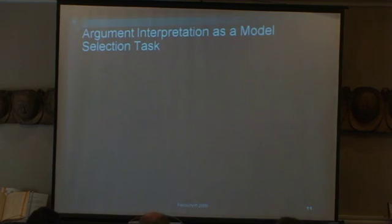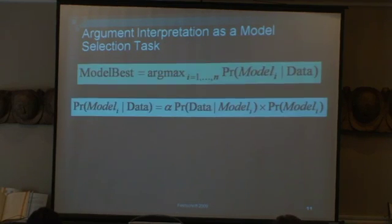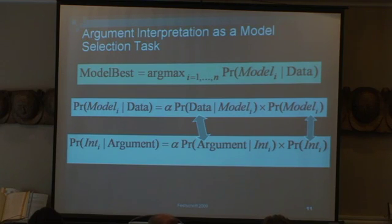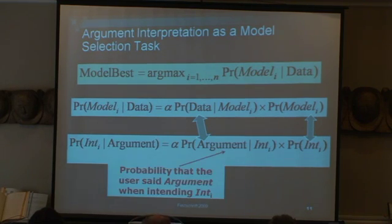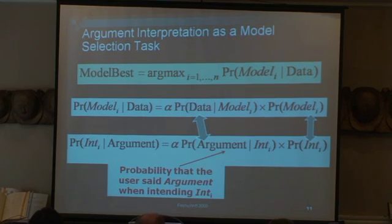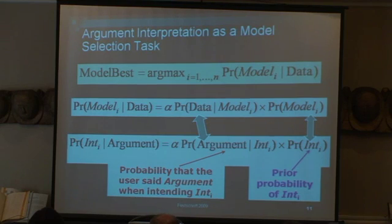This is what we're aiming to generate. The question is, how? This is where my exposure to Minimum Message Length comes in. What we want is to select the model with the maximal probability given the data. If we do the Bayesian math, you get that. Our model is an interpretation, and an argument is what the person actually says. So what interpretation do we want? The one that maximizes the entire probability. The first factor is the probability that the user said a particular thing when they intended this interpretation, and the second is the prior of the interpretation.